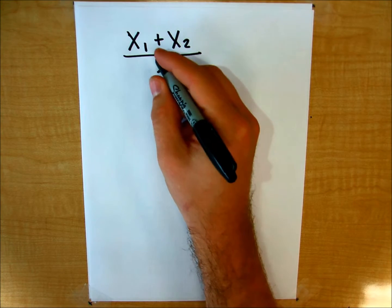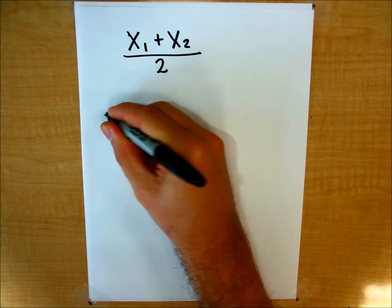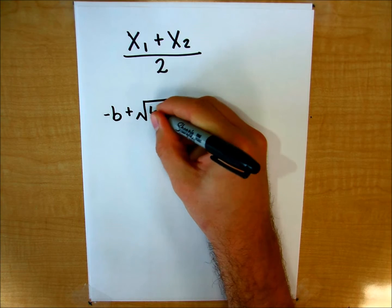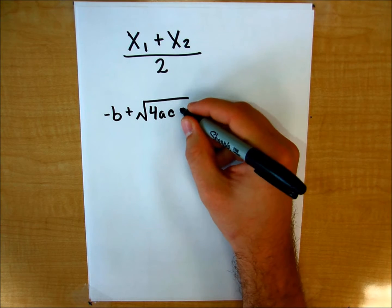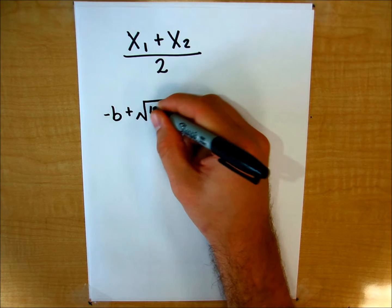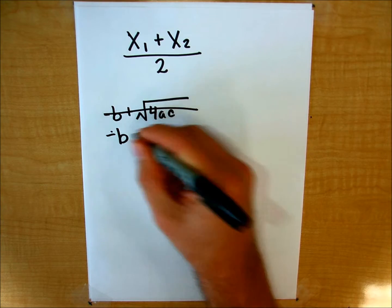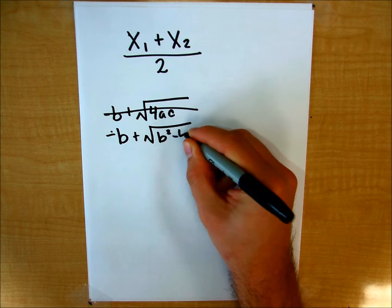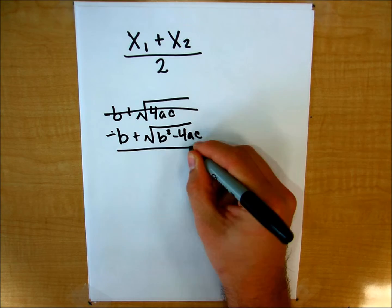So x sub 1, I can say, is negative b plus the square root of b squared minus 4ac all over 2a.